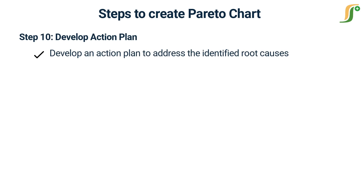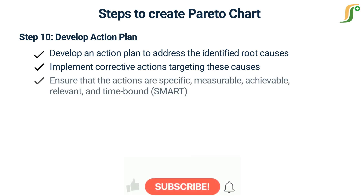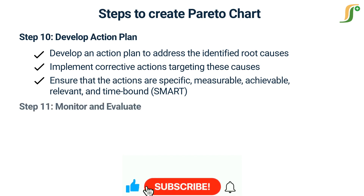Step 10 — Develop an action plan: based on the root cause analysis, develop an action plan to address the identified root causes. Implement corrective actions targeting these causes, such as cross-checking parameters by a QA person, optimizing equipment settings, or enhancing operator training on blending techniques. Ensure that the actions are SMART — specific, measurable, achievable, relevant, and time-bound.